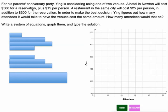One more. For his parents' anniversary party, Ying is considering using one of two venues. A hotel in Newton will cost him $500 for a reservation plus $15 per person. That's pretty swanky. A restaurant in the same city will cost $25 per person. That's more per person in addition to $300 for the reservation, but less for the reservation. In order to make the best decision, Ying figures out how many attendees it would take to have the venues cost the same amount. Good idea, Ying.